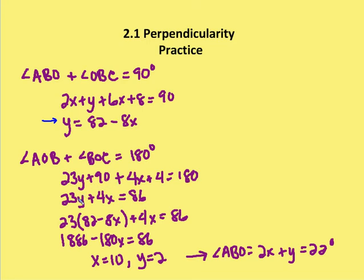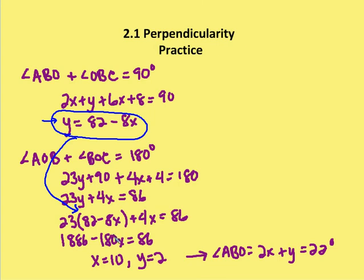We have angle AOB (23 plus y) plus angle BOC (4x plus 4) equal to 180 degrees. Simplifying gives 23 plus y plus 4x plus 4 equals 180. Now substituting y equals 82 minus 8x, we get 23 plus 82 minus 8x plus 4x plus 4 equals 180, which simplifies to 1886 minus 180x equals 86. Wait — distributing gives 109 minus 4x equals 86, and from that x equals 10, since 180x equals 1800.